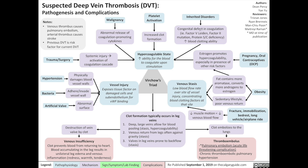Heritable disorders, such as congenital defects in coagulation — including Factor V Leiden, Factor II mutation, and protein S and C deficiency — will all increase the blood clotting ability.